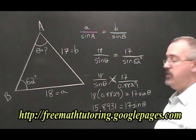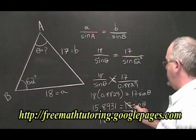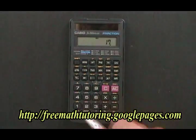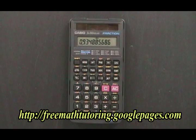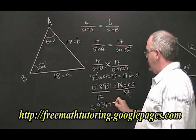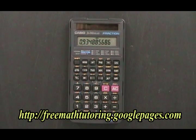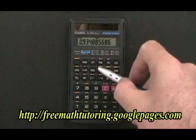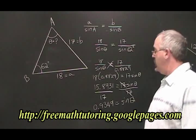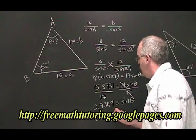We can divide both sides of this equation by 17. This will allow us to cancel our 17s. 15.8931 divided by 17 is equal to 0.9349. 0.9349 is equal to sine of theta. The arcsine of 0.9349 is equal to 69.2097 degrees. And now we know that theta is equal to 69.2097 degrees.